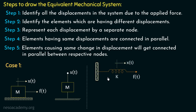Similarly, let us consider a case with a spring of spring constant k connected to a fixed support on one side, with a force f applied on the other side causing displacement x(t). Applying step number one, the displacement is x(t). In step number two, we have only one element — the spring — with one displacement, so we move directly to step number three. We represent displacement x(t) with a separate node and consider a reference level.